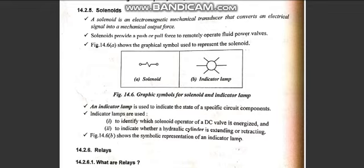The solenoid valve has an indicator lamp that shows when the solenoid is energized and actuating. Solenoids are used to push or pull force remotely on fluid power valves — specifically direction control valves. With this, the video is complete. In the next video we will look at relays. Thank you.